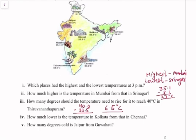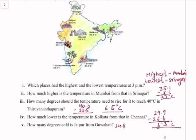How much lower is the temperature in Kolkata than in Chennai? In Chennai the temperature is 29.9 degrees Celsius, whereas in Kolkata it is 26.6. Subtracting 26.6 from 29.9, we get 3.3 degrees Celsius. How many degrees colder is Jaipur than Guwahati? Guwahati is 24.8 and Jaipur is 23.2. Subtracting, we get 1.6 degrees Celsius.